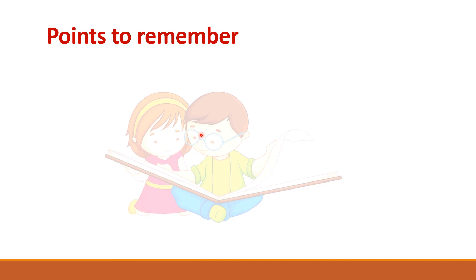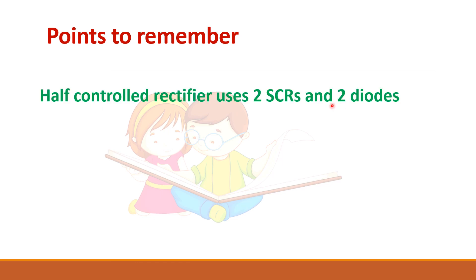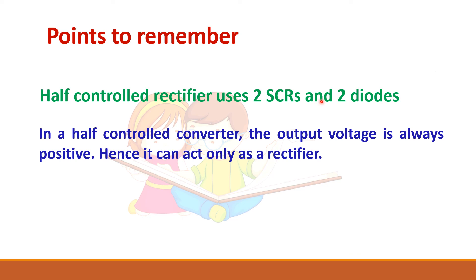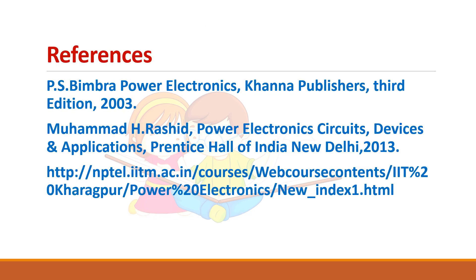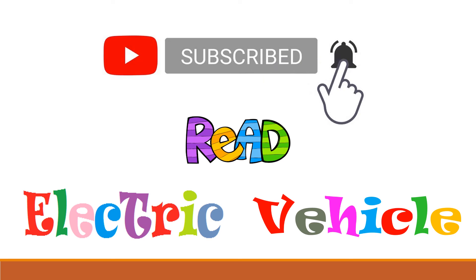Key points to remember: the half controlled rectifier uses 2 SCRs and 2 diodes. The output voltage is always positive, so only rectifier mode of operation is possible. For the same firing angle, the semi-converter gives higher output voltage compared to a fully controlled converter. Please subscribe to the Reed Electric Vehicle Channel if you found this video helpful.